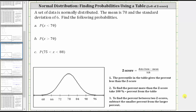In this video, we will look at three examples of determining the probability that a randomly selected data value from a normal distribution is in a given interval. We'll be determining the probabilities using a table that gives the probability left of a z-score.